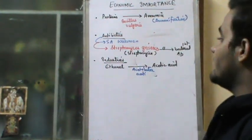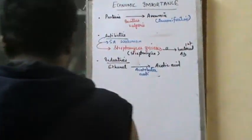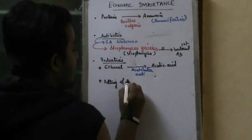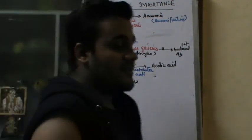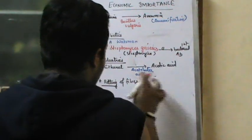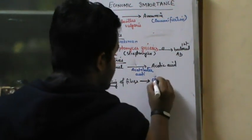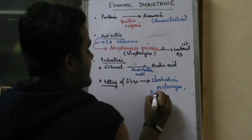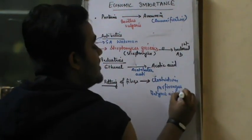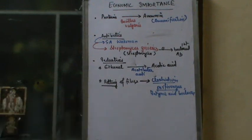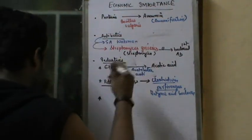Retting of fibers — NCERT example, very, very important. Retting is the process of separating fibers from a particular plant. It is something done by Clostridium perfaringens and butyric acid bacteria — Clostridium butylicum. Clostridium perfaringens is an NCERT example for retting of fibers.